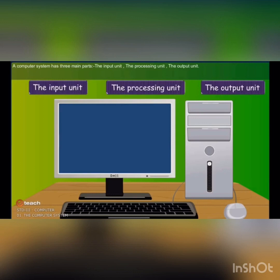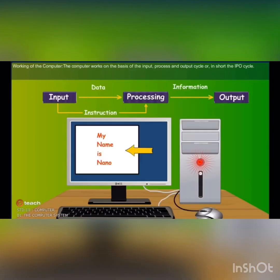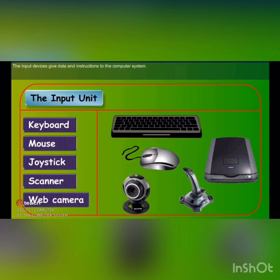You can see in the picture. Now the working of computer. The computer works on the basis of input, process and output. That is also called IPO cycle. Data and information are given through the input devices to the CPU. Then CPU processes it and gives output as you can see on the monitor.